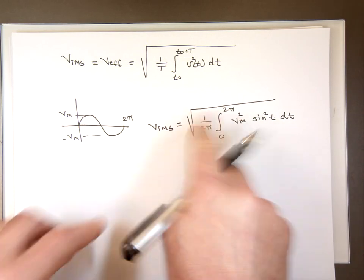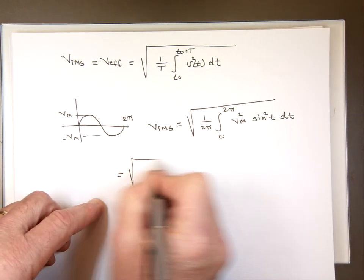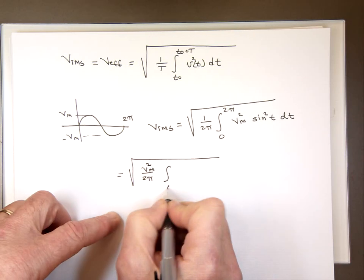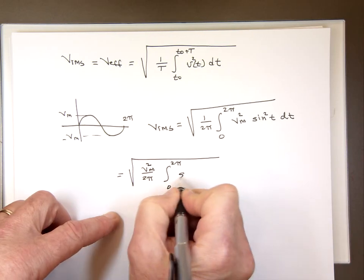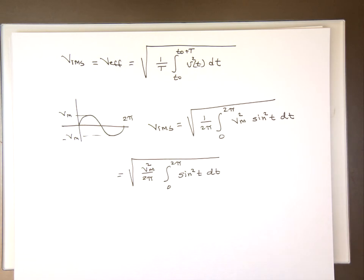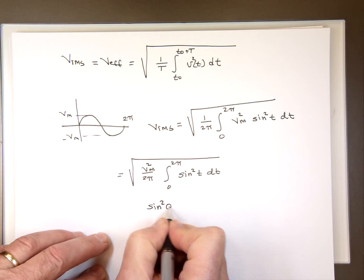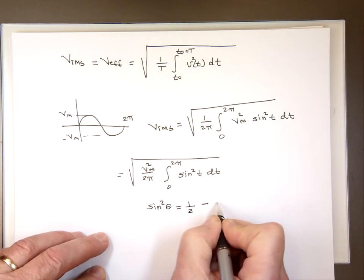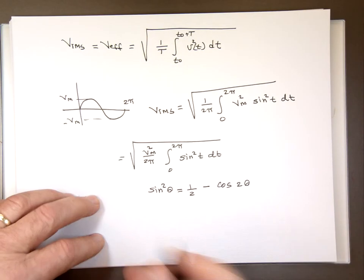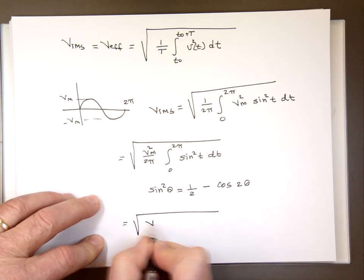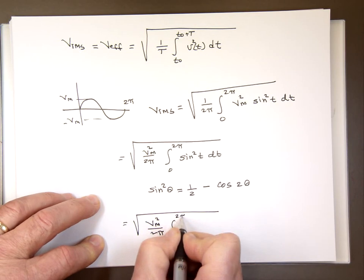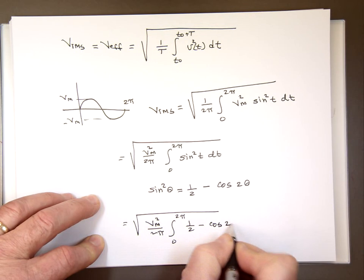And I can take the Vmax outside the integral. Vmax squared. And you can't really integrate sine squared. But there's a trig identity that says sine squared theta equals 1 half minus cosine 2 theta. So if we use that identity, this problem becomes Vmax squared over 2 pi. That's 2 here. The integral from 0 to 2 pi of 1 half minus cosine 2t dt.